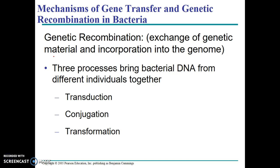The other main way that bacteria can get genetic variation is through genetic recombination. We're going to look at three processes that allow for genetic recombination to occur. In general, genetic recombination is when two organisms recombine their genetic material. The three ways are: transduction, conjugation, and transformation.